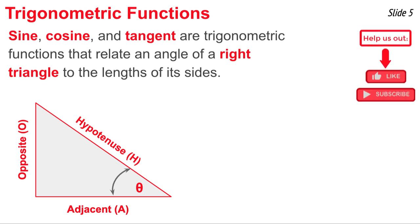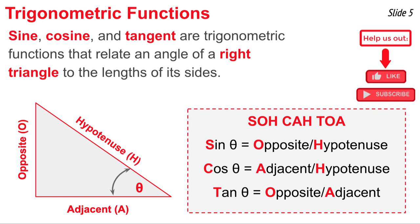To determine the direction of a resultant, you need to use the sine, cosine, and tangent functions. These three functions relate the lengths of the sides of a right triangle to the angles within it. Angle theta is defined in the bottom right corner. The side opposite theta is the vertical side, the side adjacent is the horizontal side, and the hypotenuse is the long side. Sine equals opposite over hypotenuse, cosine equals adjacent over hypotenuse, and tangent equals opposite over adjacent. We remember this with the mnemonic SOH-CAH-TOA.